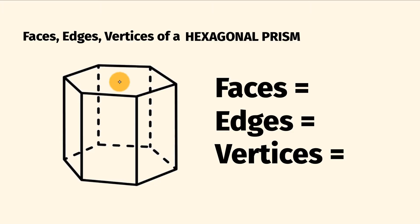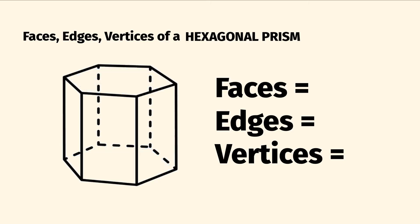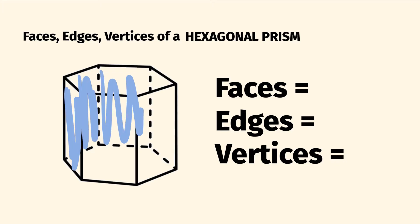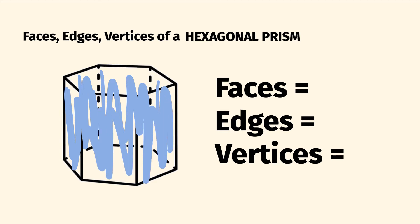These are the number of flat surfaces, so we can go through and count these. We have a hexagon on the top and a hexagon on the bottom, so that's two right there. As well as that, if we go around the edges here, we have one, two, three, four, five, six faces there. So six plus two, we have eight faces altogether.